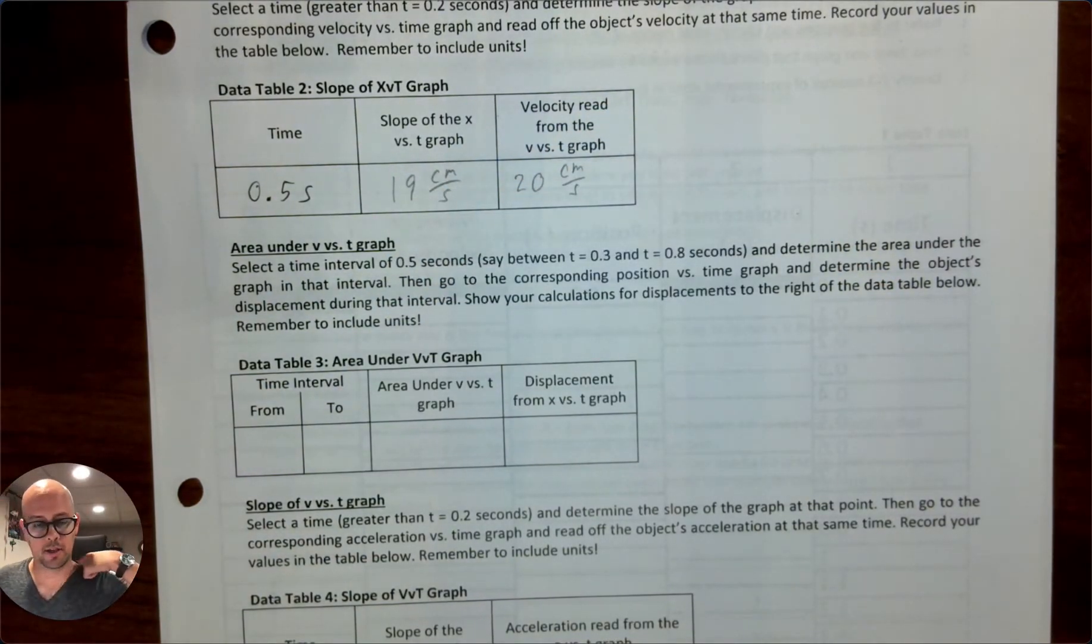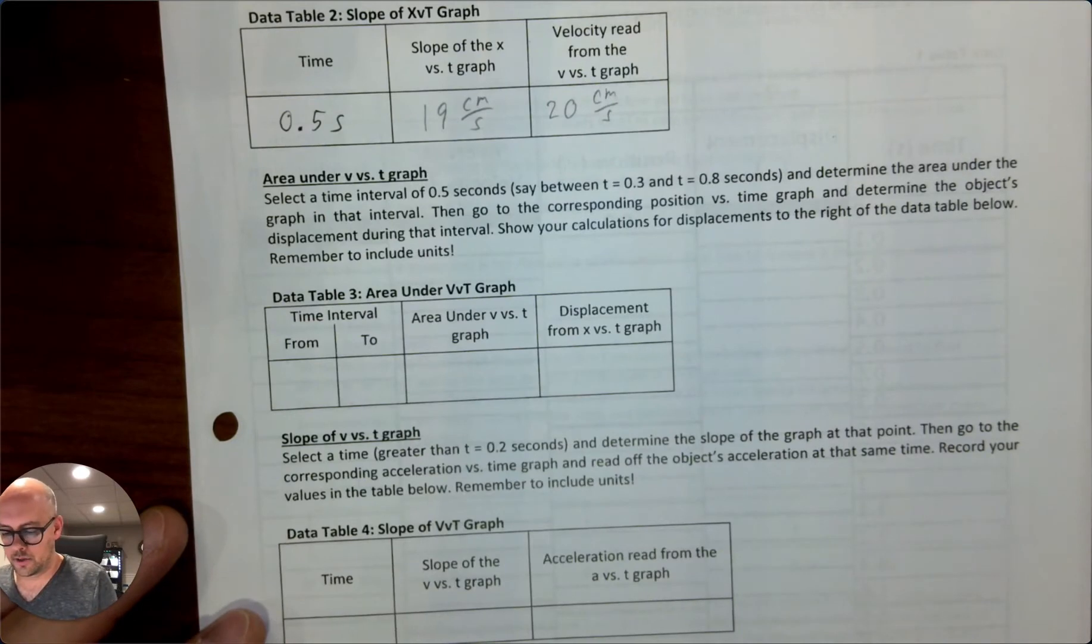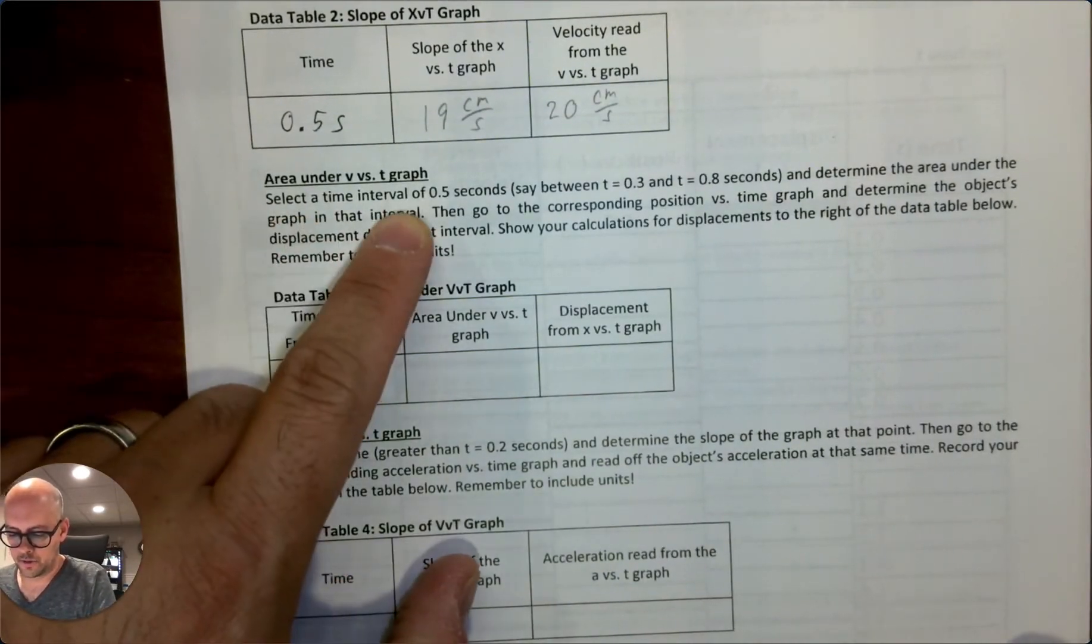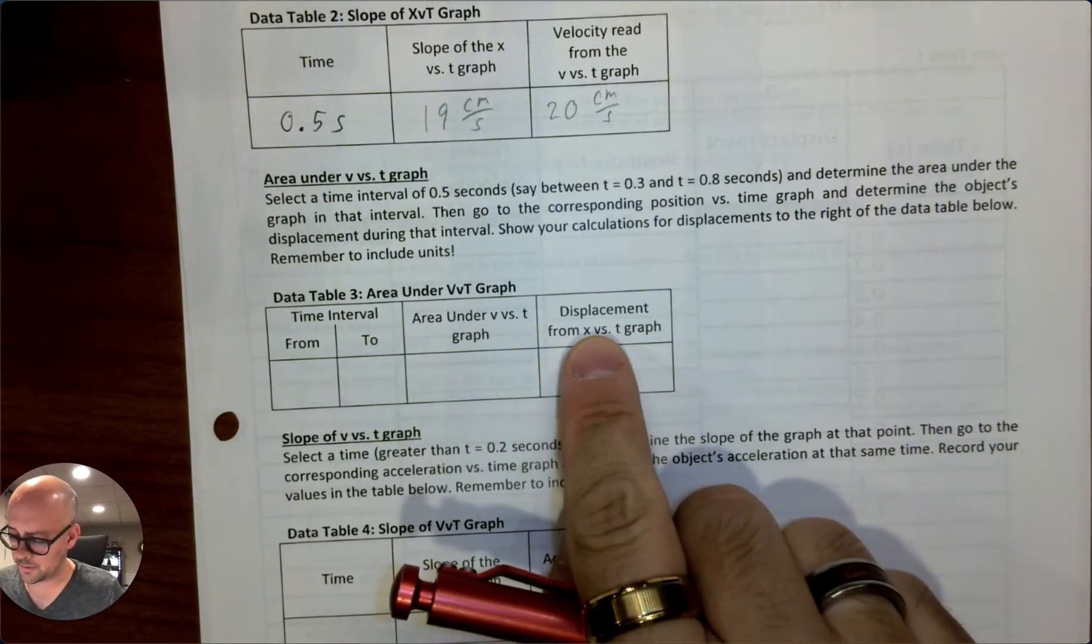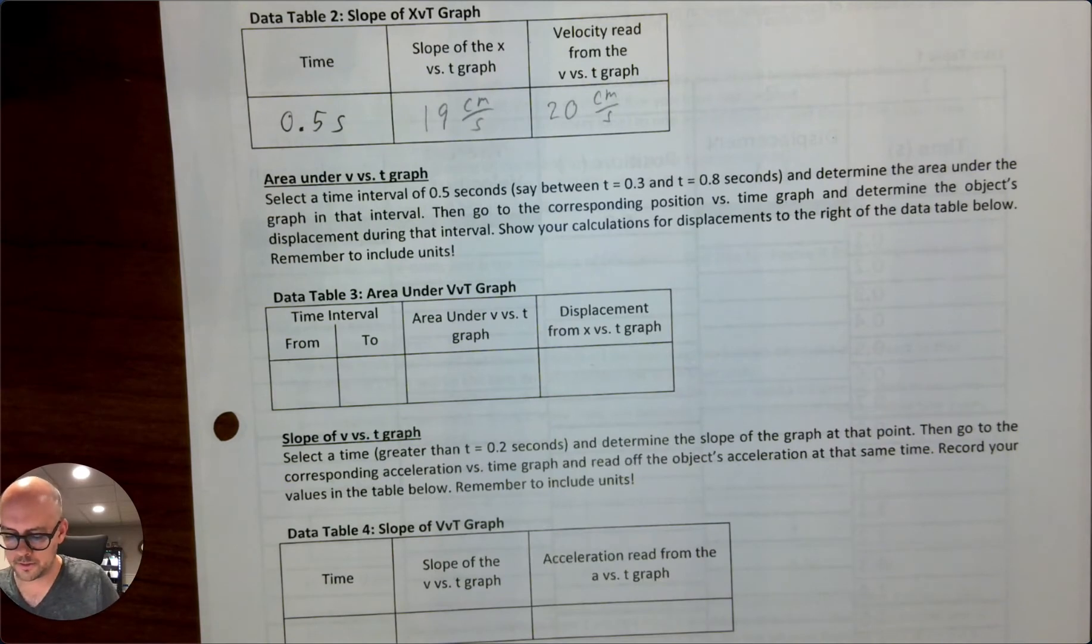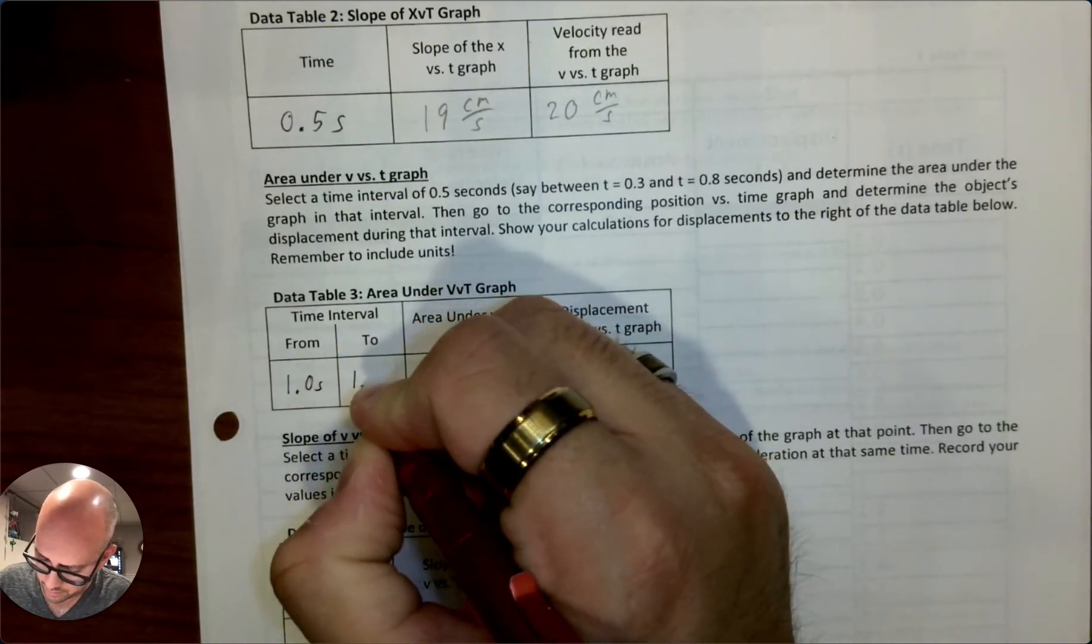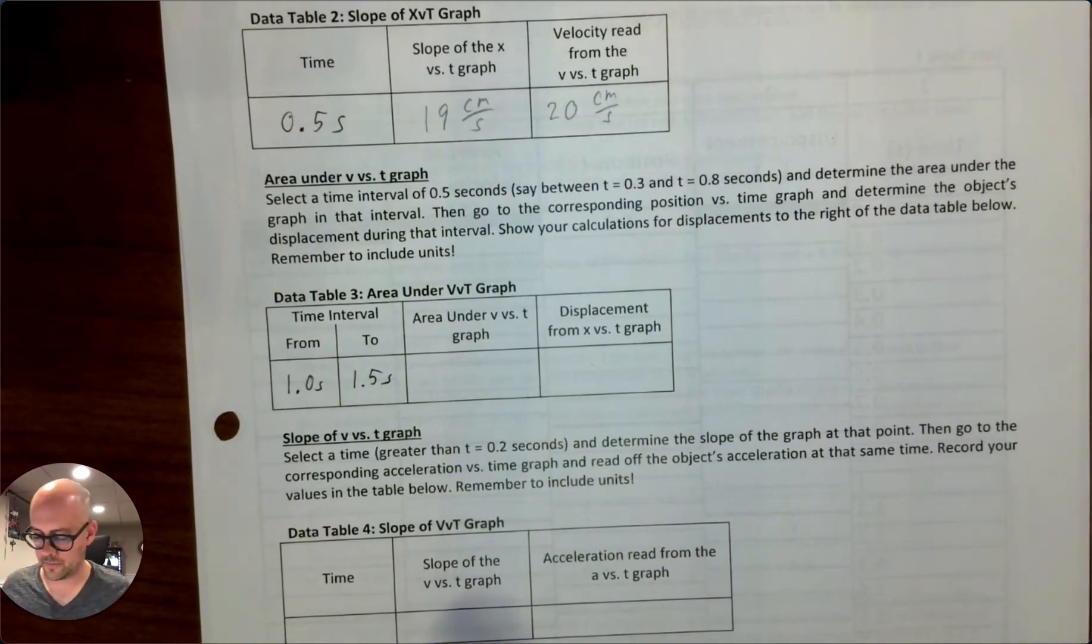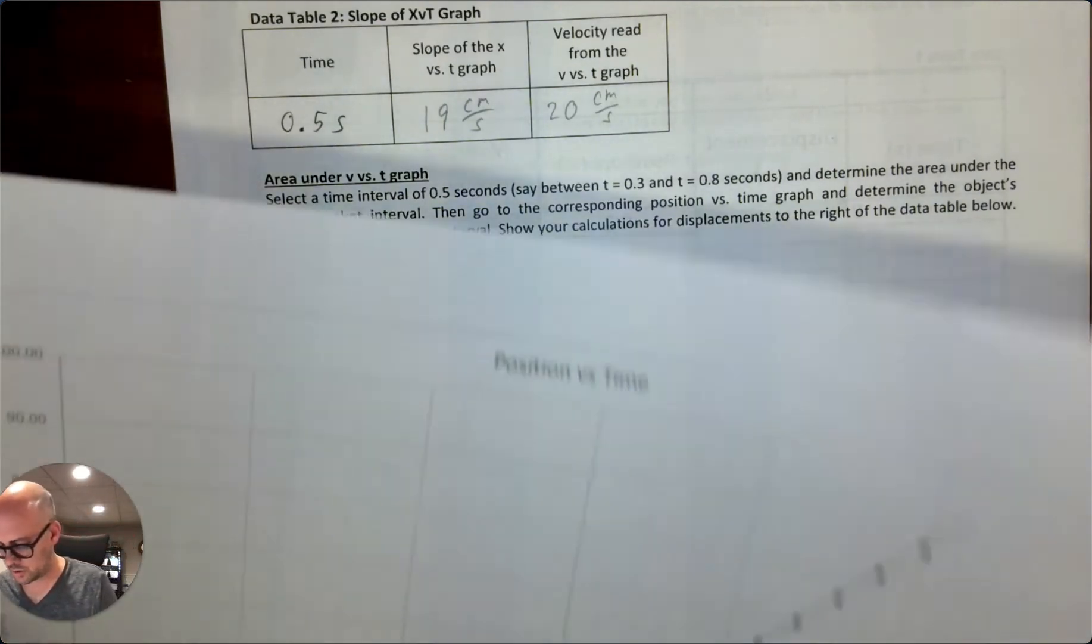And the rest of them go similarly. I just want to show one more because it's the other major skill here. The next one says area under a graph. So select a time interval of 0.5 seconds, and determine the area under the graph in that interval. Then go to the corresponding position graph and determine the object displacement. So just for some variety, I'll do one second to one and a half seconds.